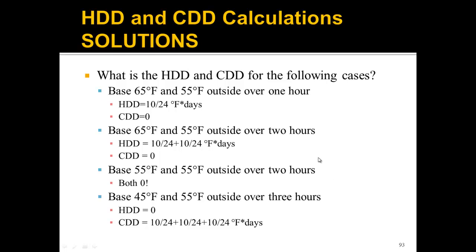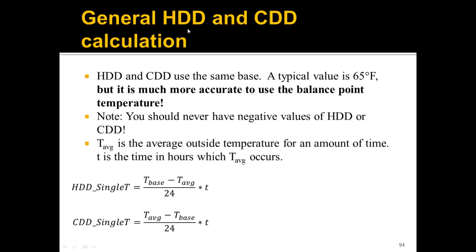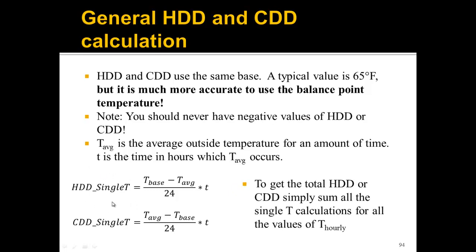For non-hourly temperature data, instead of T_hourly we use T_average — the average outside temperature for any amount of time — multiplied by t, the duration in hours. The formula becomes HDD = (T_base − T_average) × t / 24 and CDD = (T_average − T_base) × t / 24 for each time period. To get total heating or cooling degree days, sum all individual time-period calculations.